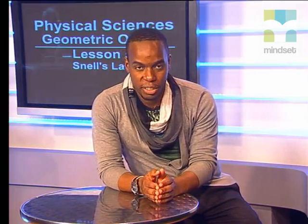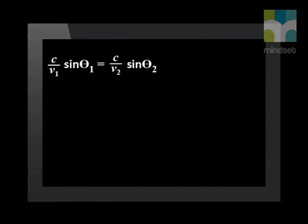Now we can use a combination of Snell's Law and the equation for the refractive index to develop a new equation. We know that N1 equals c, the speed of light in a vacuum, divided by the speed of light in the substance, v. So we can substitute N1 equals c divided by v1 and N2 equals c divided by v2. This means that Snell's Law can be written as c divided by v1 times sin theta 1 equals c divided by v2 times sin theta 2.